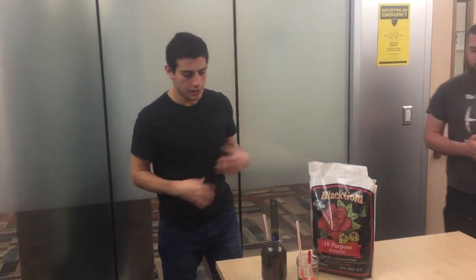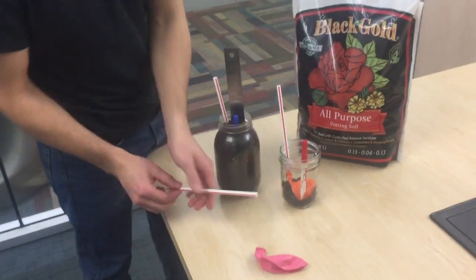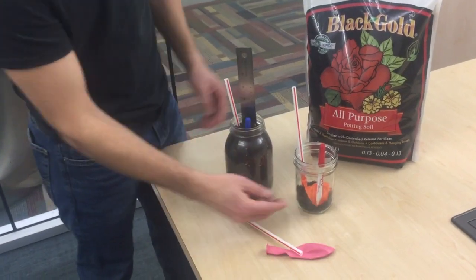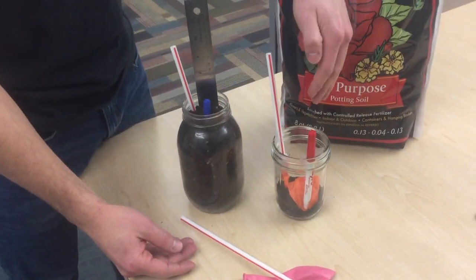The way we're going to show you how that works is we're going to use a balloon, a straw, and we tied the straw to the balloon. We put some soil underneath the mason jar and then the balloon with the straw, and then we're going to add soil on top.